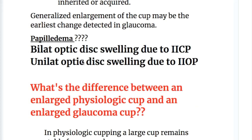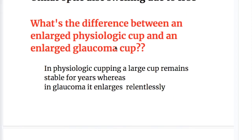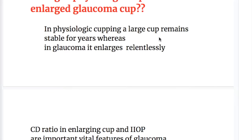Disc swelling may be unilateral or bilateral. A bilateral optic disc swelling due to increased intracranial pressure is called papilledema. A unilateral optic disc swelling is due to increased intraocular pressure. Regarding the cup: in physiologic cupping, a large cup remains stable for years, whereas in glaucoma, it enlarges relentlessly.